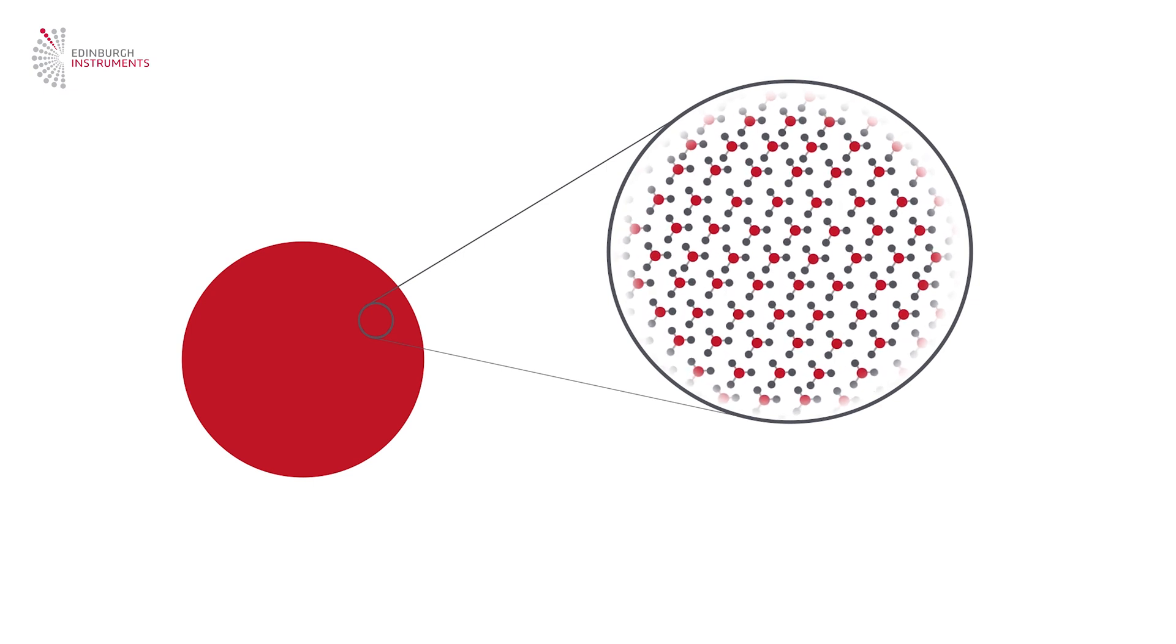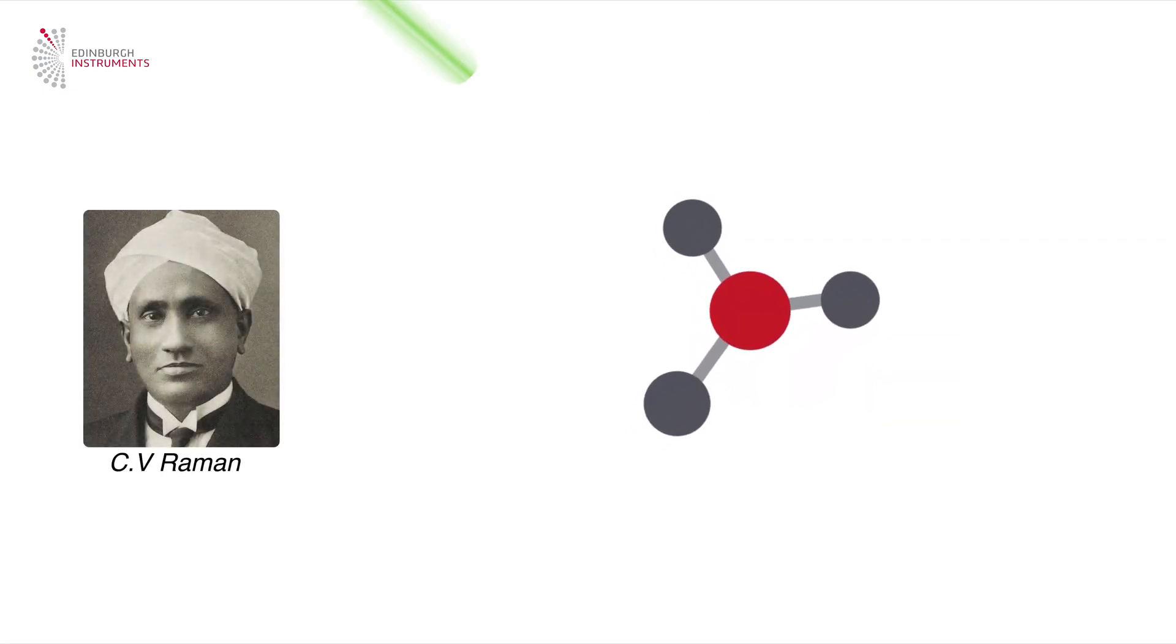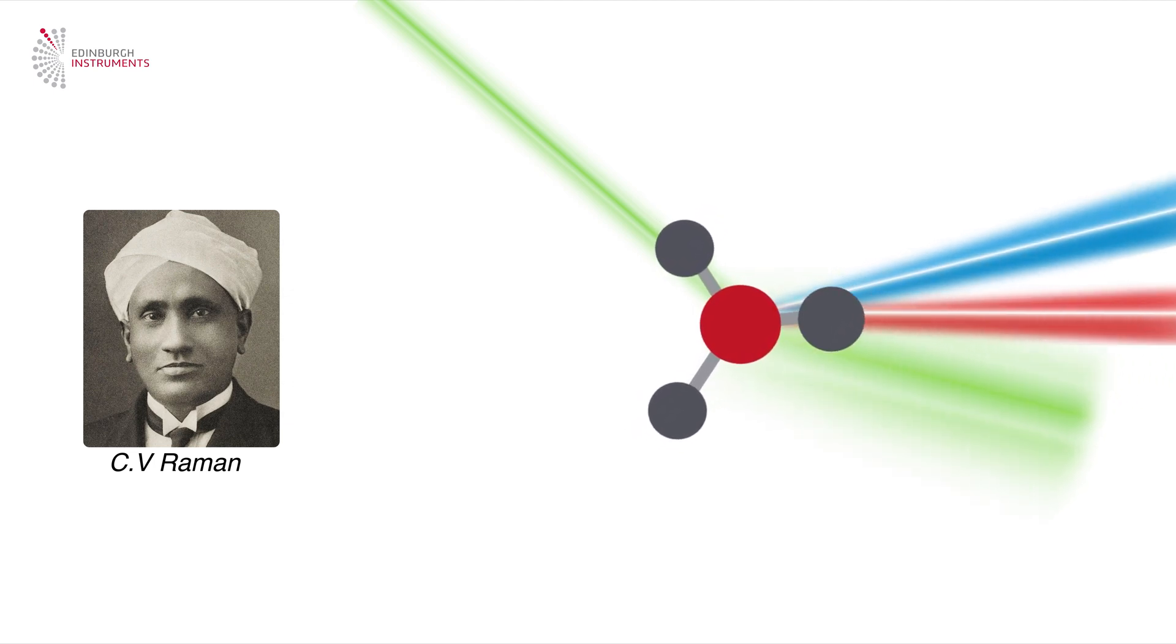In 1928, the physicist C.V. Raman made a groundbreaking discovery. He observed that when light interacts with molecules, a small fraction of the scattered light undergoes shifts in wavelength, revealing insights into the molecular vibrations.